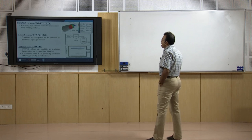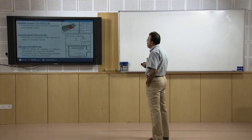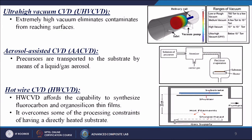Ultra-high vacuum CVD (UHVCVD) uses extremely high vacuum to eliminate contaminants from reaching the surface. In this process, a vacuum pump is used, there is a delivery line, the gas is purged inside, the reaction takes place inside, and through the delivery layers the gas deposits onto the substrate itself.